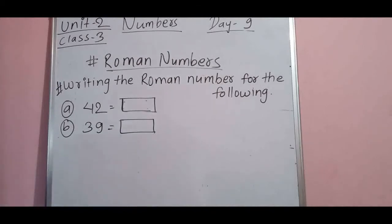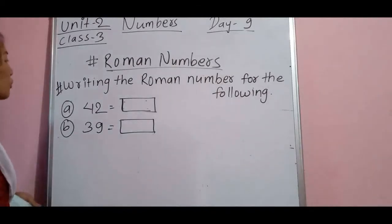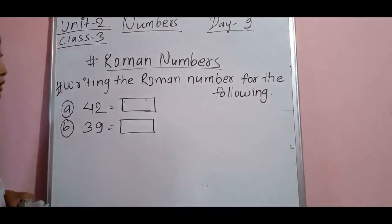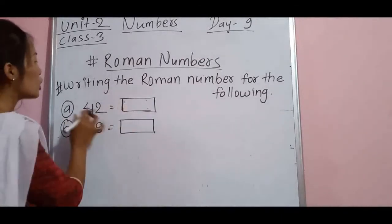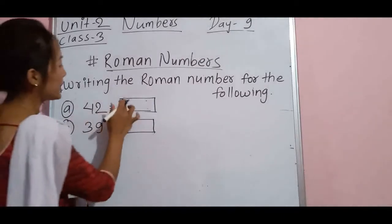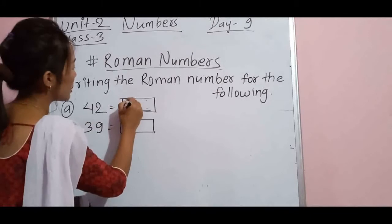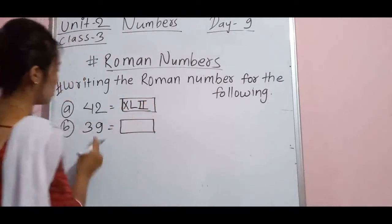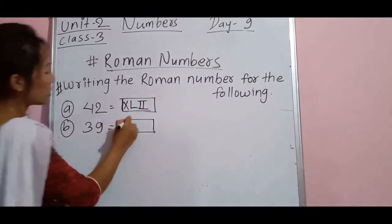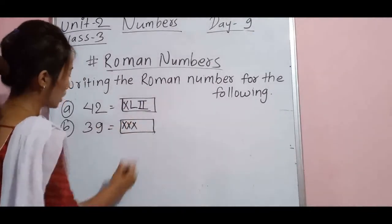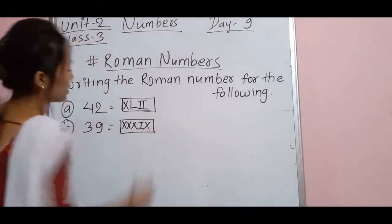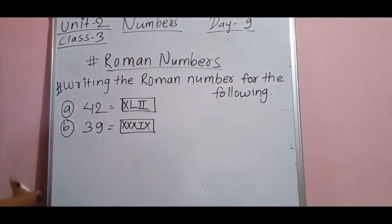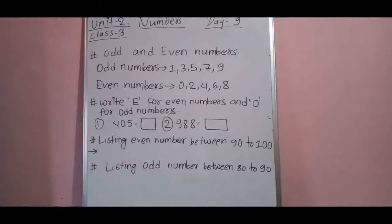Here is the next question under the Roman number topic: write the Roman number for the following. Here it is written in Hindu-Arabic numbers and you have to write the Roman number. For example, 42: the Roman number is XLII. After that 39: write its Roman number. So this is the way to write Roman numbers.